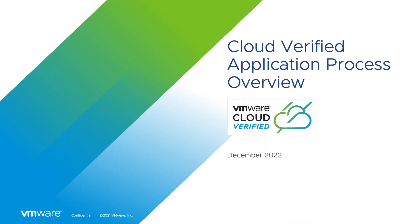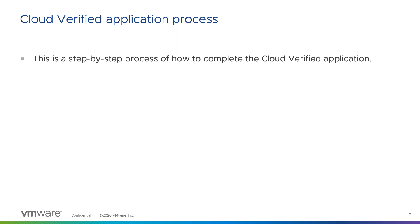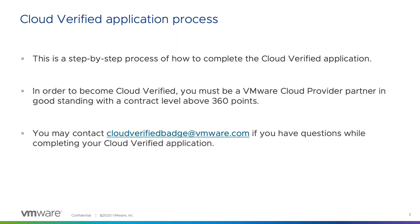Welcome to the VMware Cloud Verified application process. Today we will be walking you through the step-by-step process of how to complete a VMware Cloud Verified application. Please remember that in order to begin this process, you must be a VMware Cloud Provider Partner in good standing with a contract level above 360 points. You can contact CloudVerifiedBadge at VMware.com if you have any questions while navigating through this process.